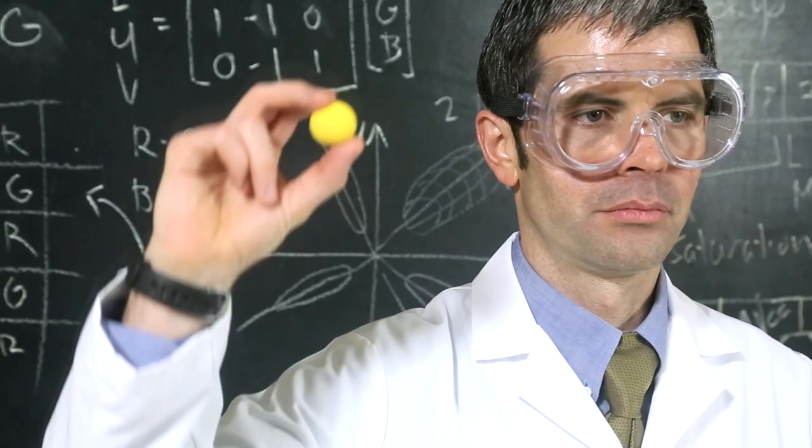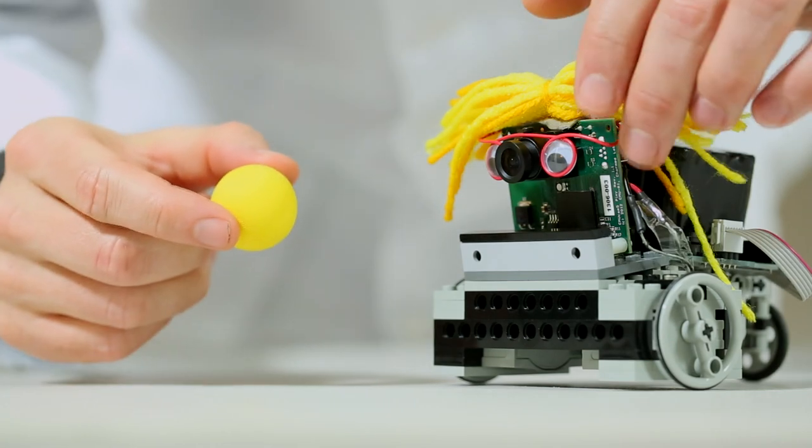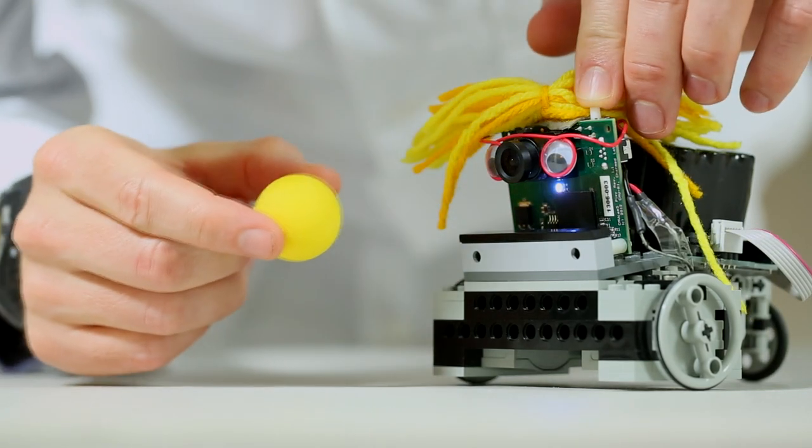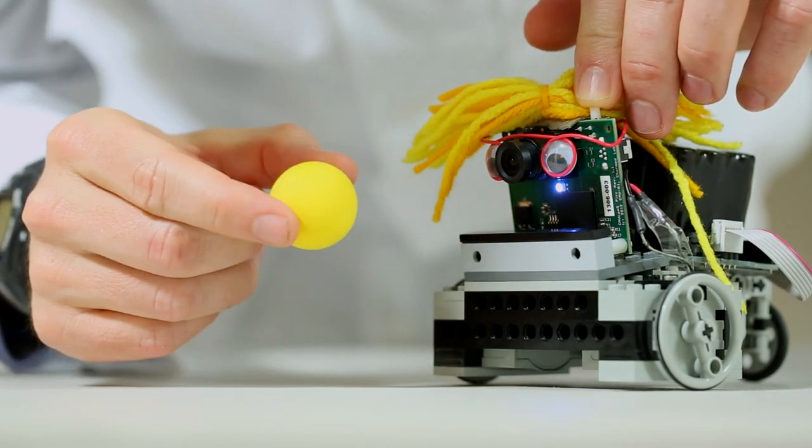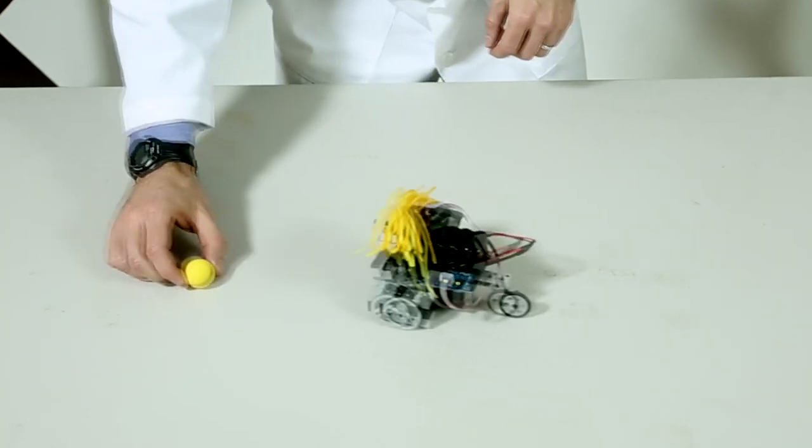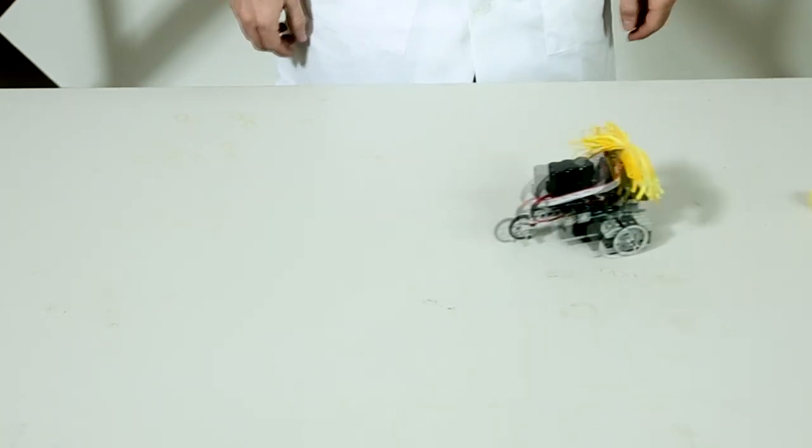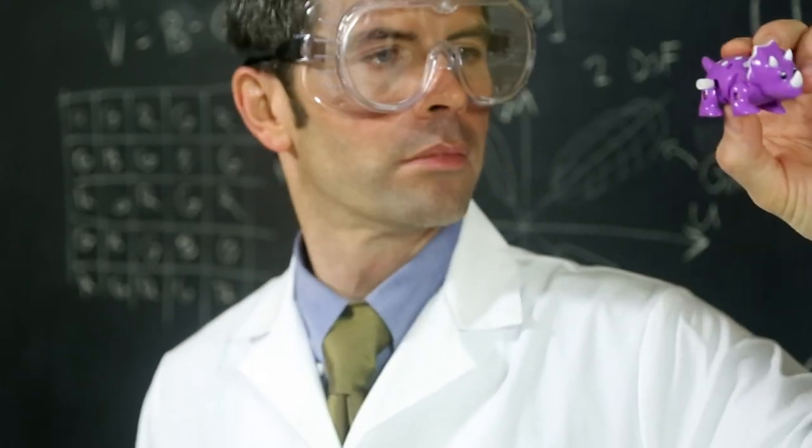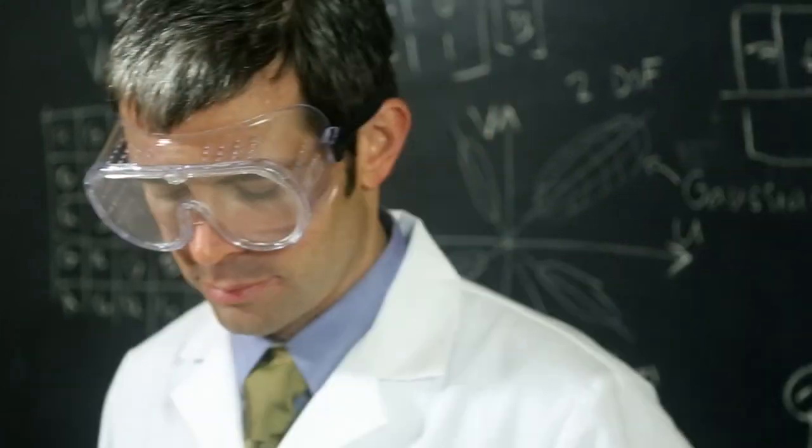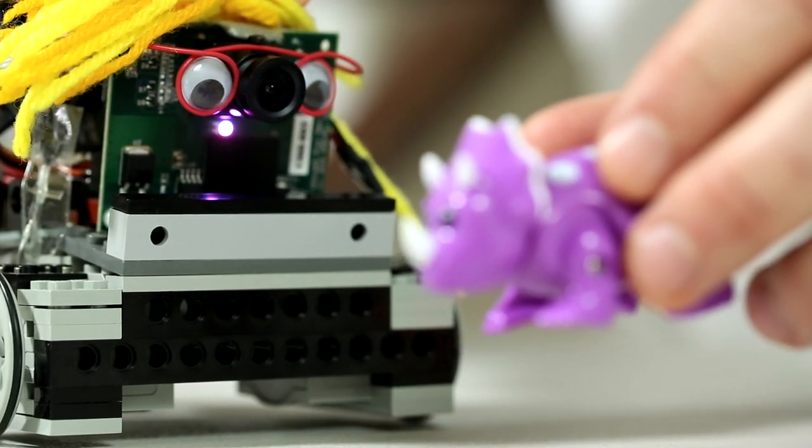PIXI uses color cues and special algorithms to find objects. You can teach PIXI what you want to find by presenting the object and using the color LED as feedback. When the color LED matches the color of the object, release the button and PIXI will begin finding objects of that color and reporting their locations. Since teaching is fast and easy, adding new objects is fast and easy.